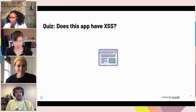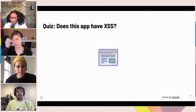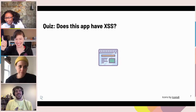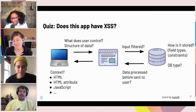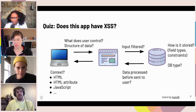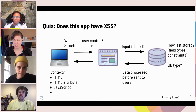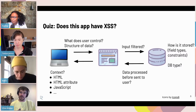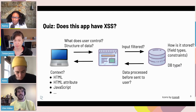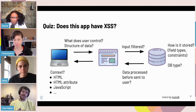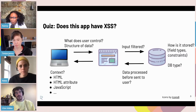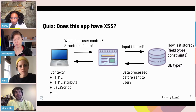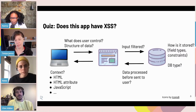Quick quiz: let's say I gave you a random web app and asked, does this have cross-site scripting in it? You'd probably say yes — and you'd probably be right — but you'd have a lot of questions. What does the user control? What's the structure of that data? Does the web app filter the data? How is it stored in the database — as ints, floats, strings, or arbitrary JSON? When it's outputted to the user's browser, is that user input inserted into HTML, an HTML attribute, or JavaScript?